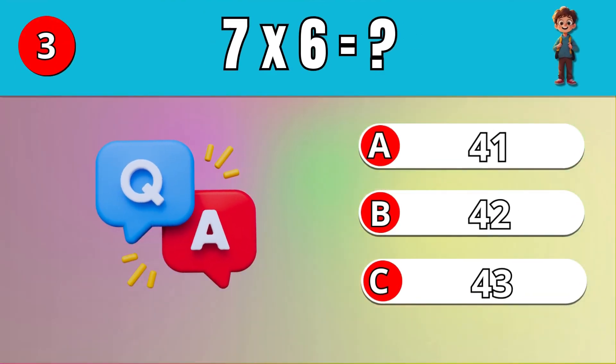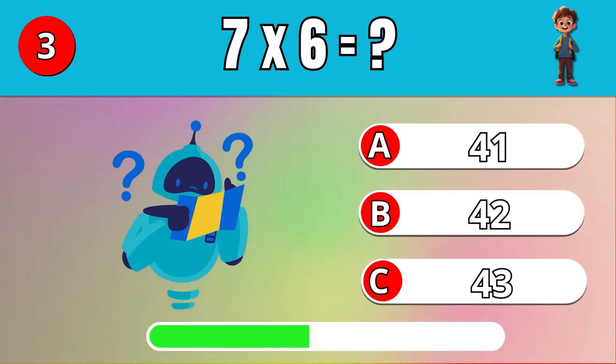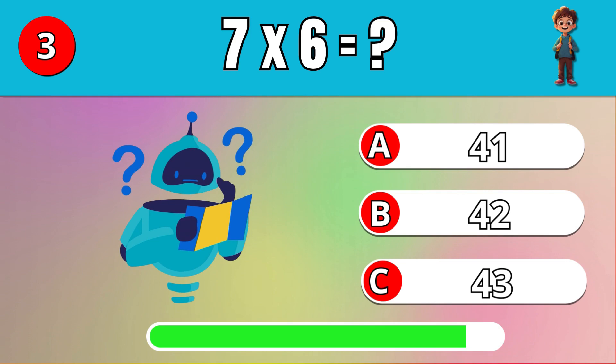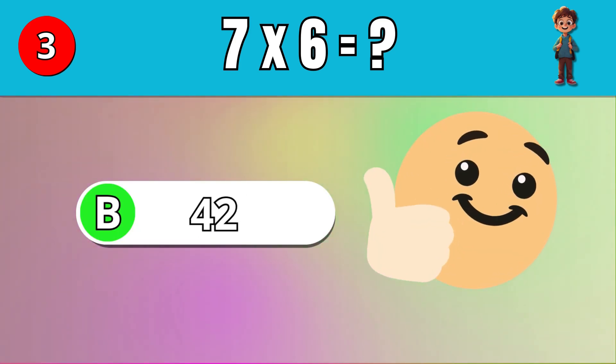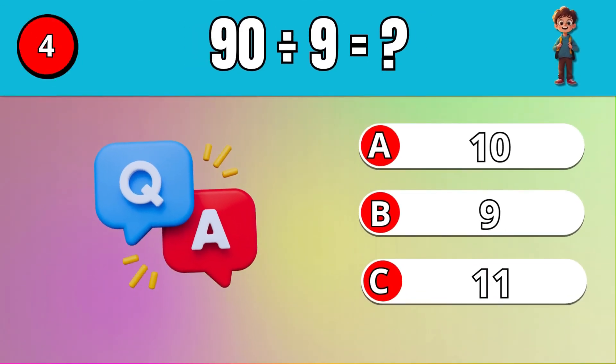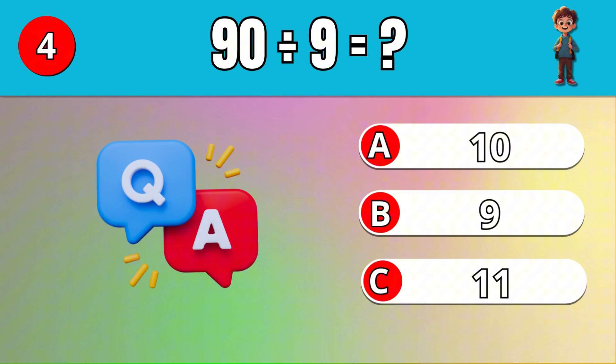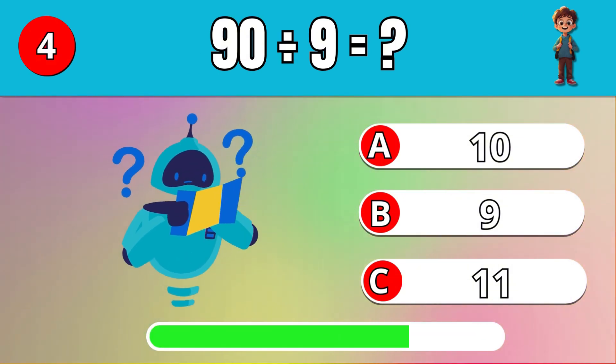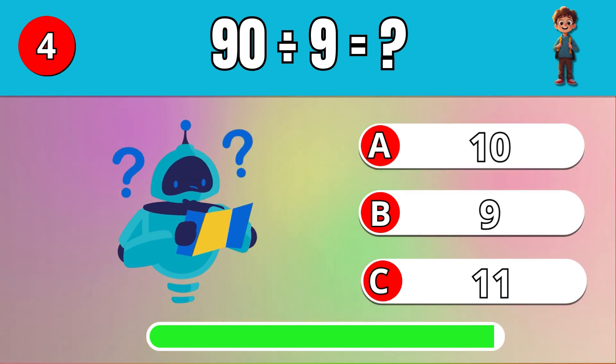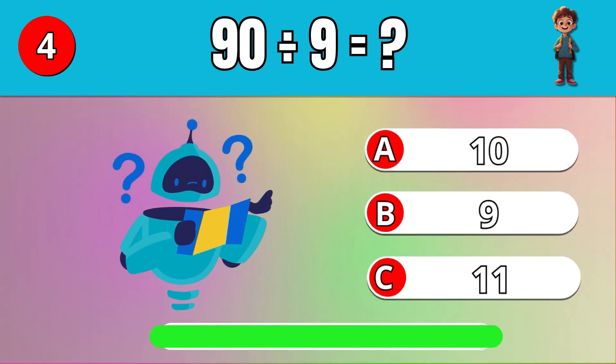What is 7 times 6? B, 42. What is 90 divided by 9? A, 10.